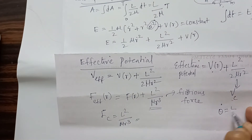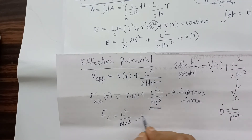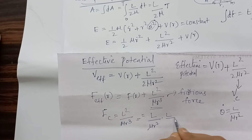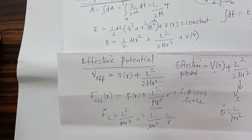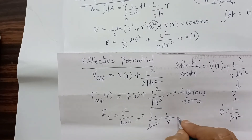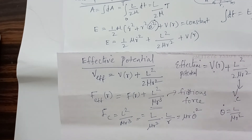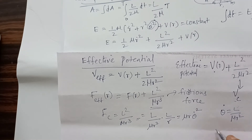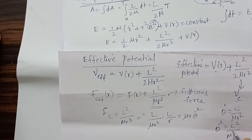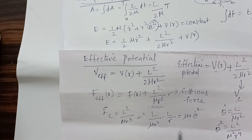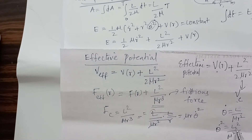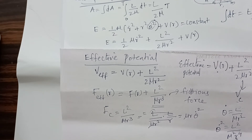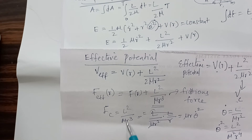We already know θ̇ = L / (μr²). So L / (μr²) × (L/r) gives us θ̇² = L² / (μ²r⁴). We can then write μr × θ̇² accordingly.